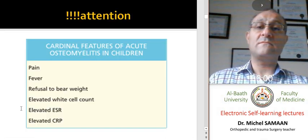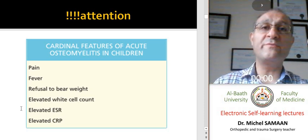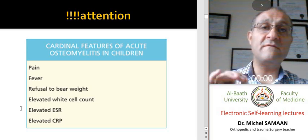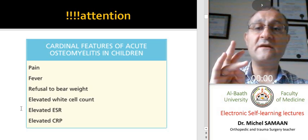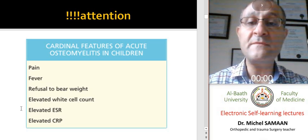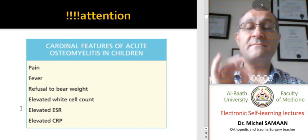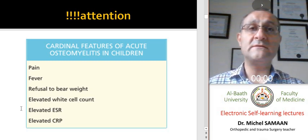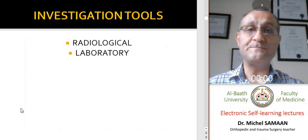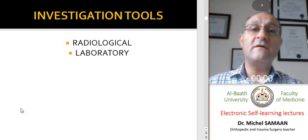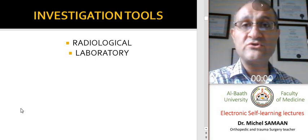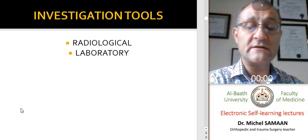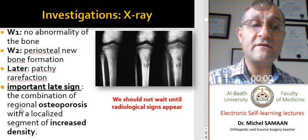Pay attention. Any fever, pain, refusal to bear weight, loss of function — as we have said — with laboratory signs of infection such as increased white blood cells, elevated ESR, elevated CRP, are the stigmata or characteristics of osteomyelitis in children. We should diagnose or eliminate this cause. Investigation tools to diagnose osteomyelitis vary between radiological and laboratory tests.